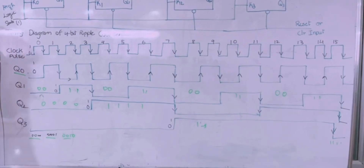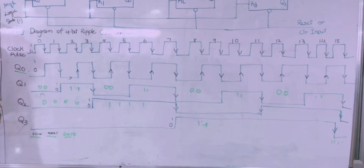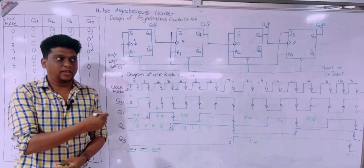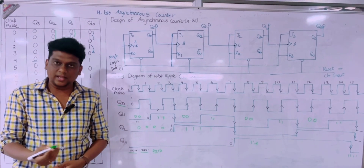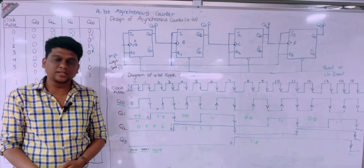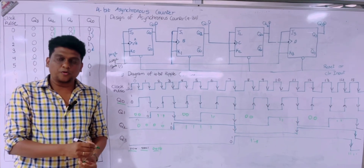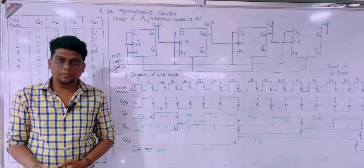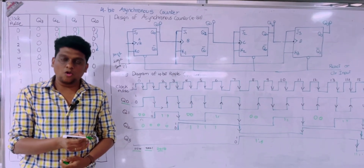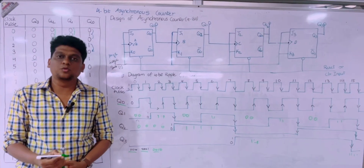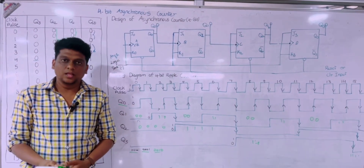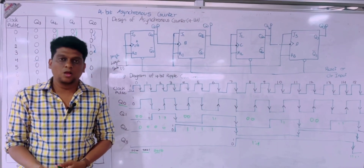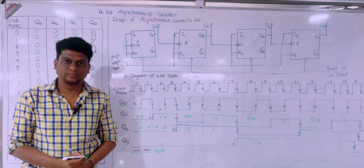This is how the 4-bit asynchronous counter works. If we need a MOD-10 asynchronous counter, we count from 0 to 9. A BCD counter also counts from 0 to 9. Thank you for watching the video.